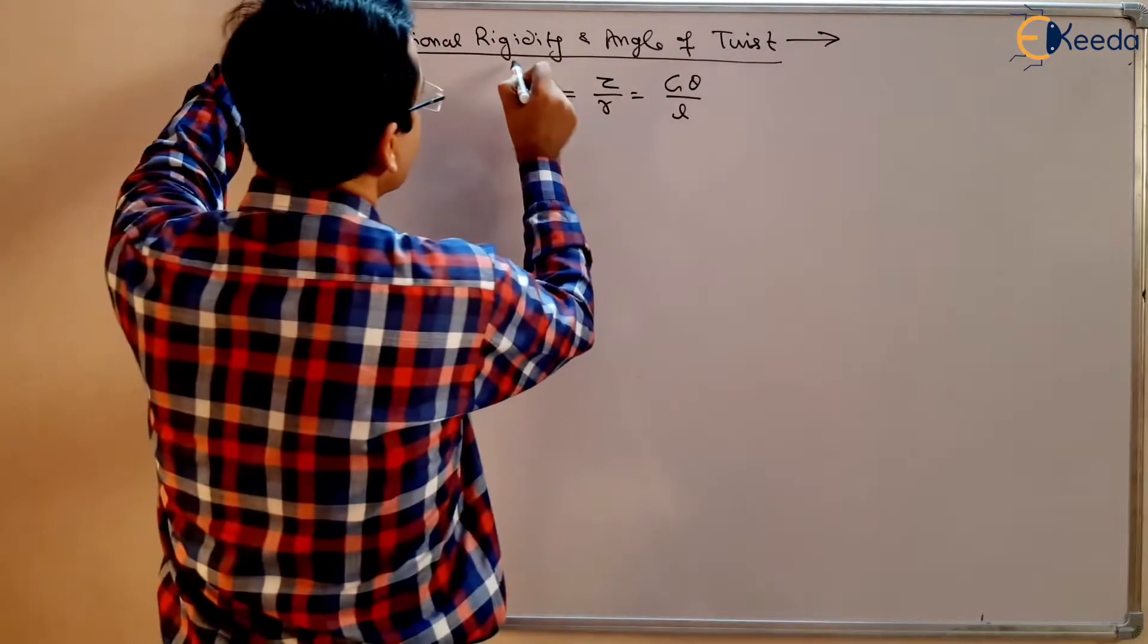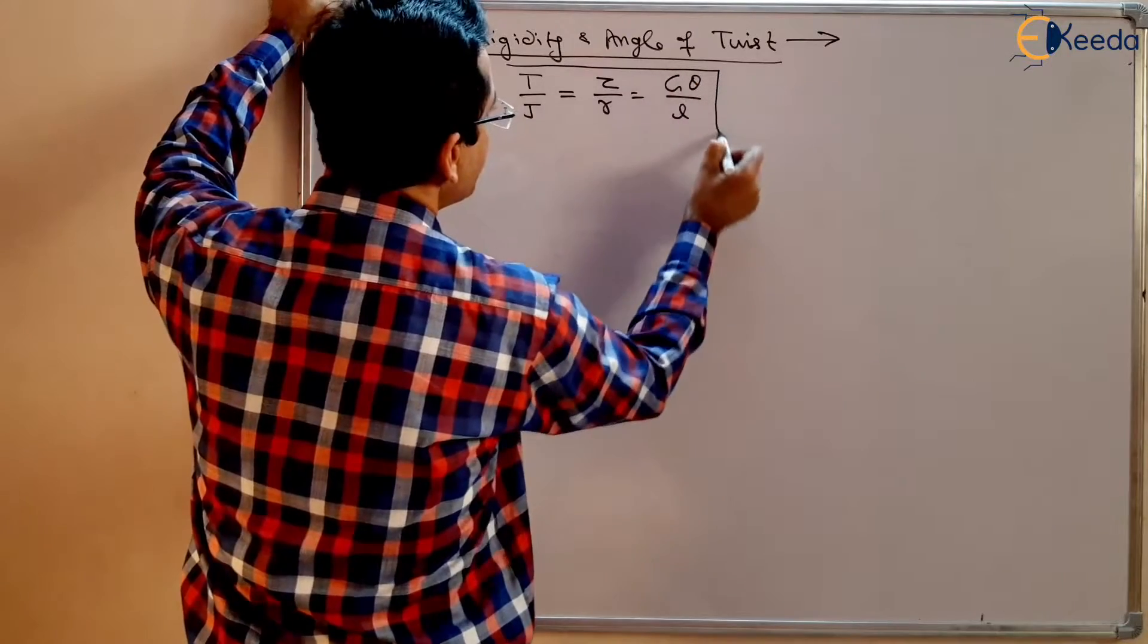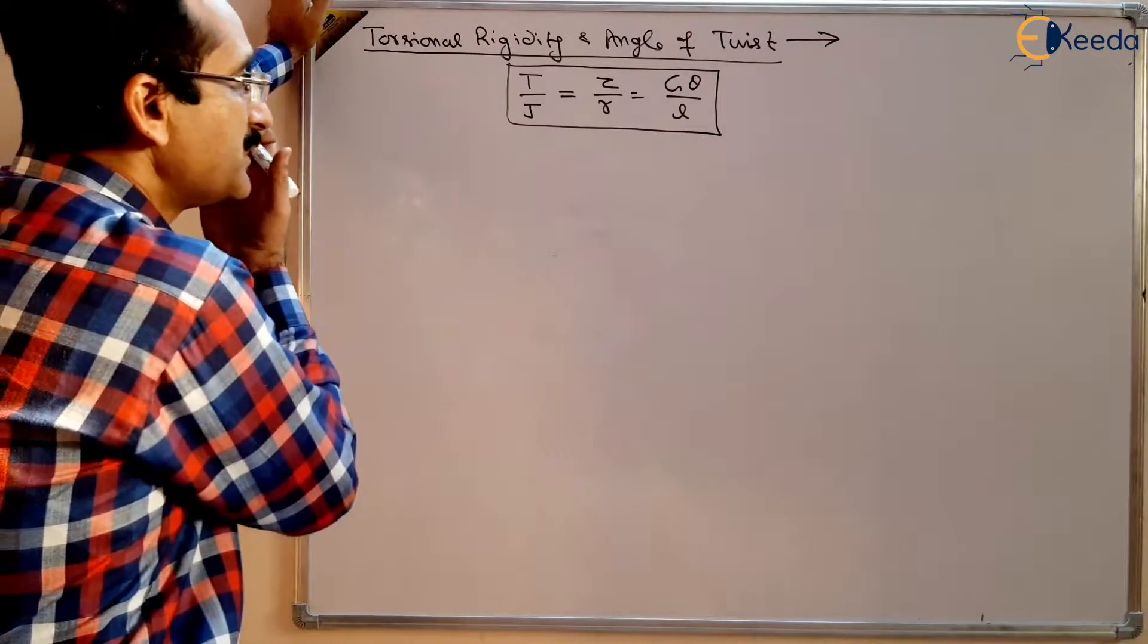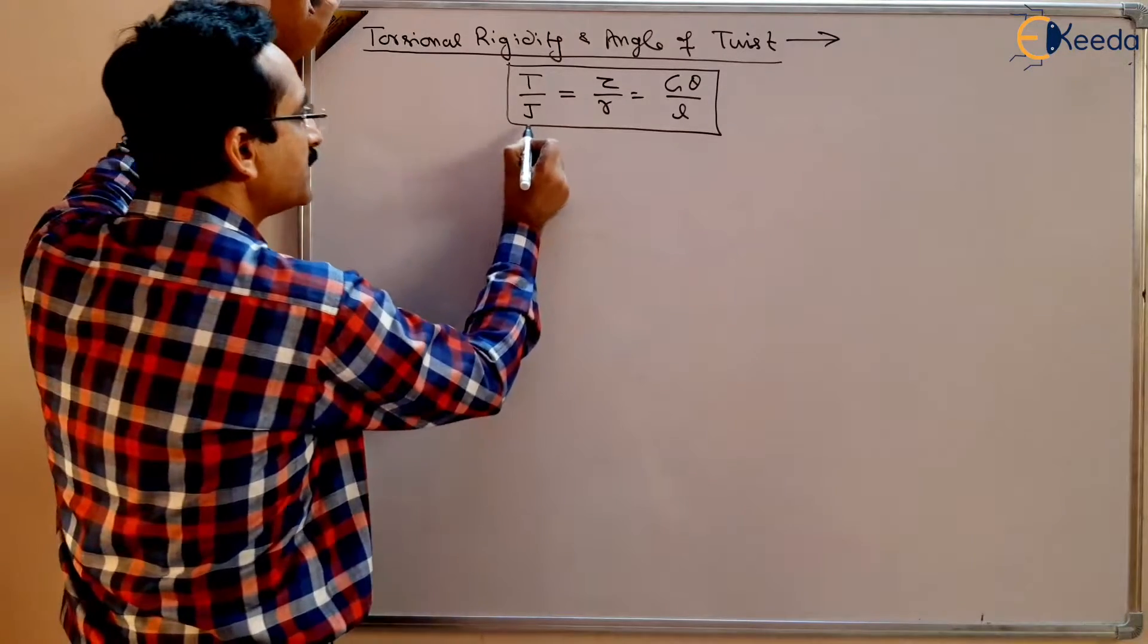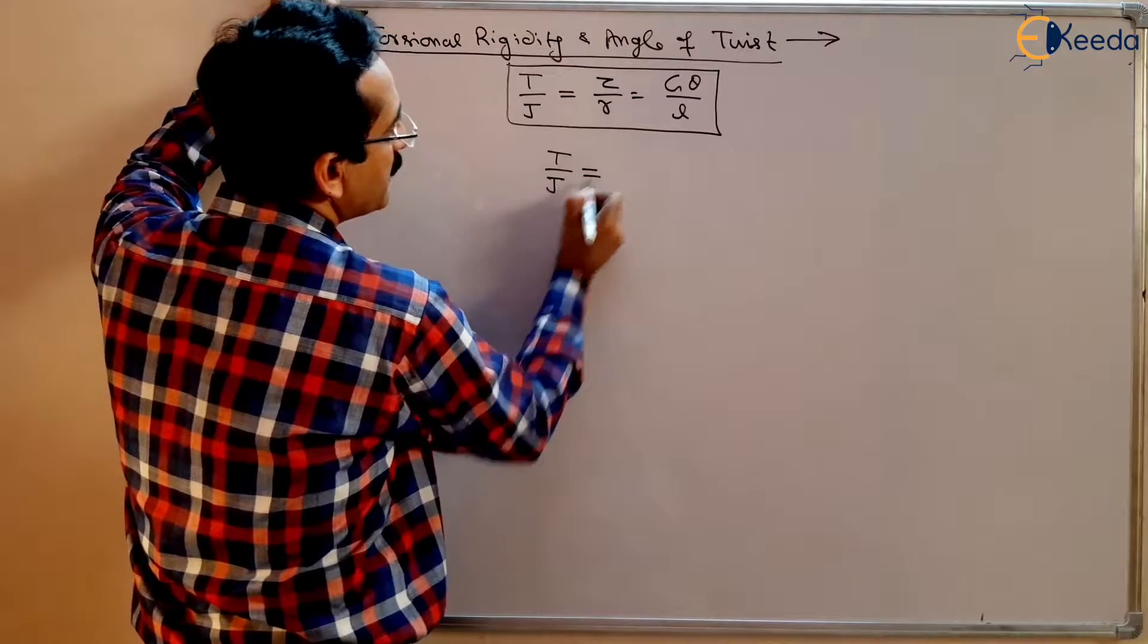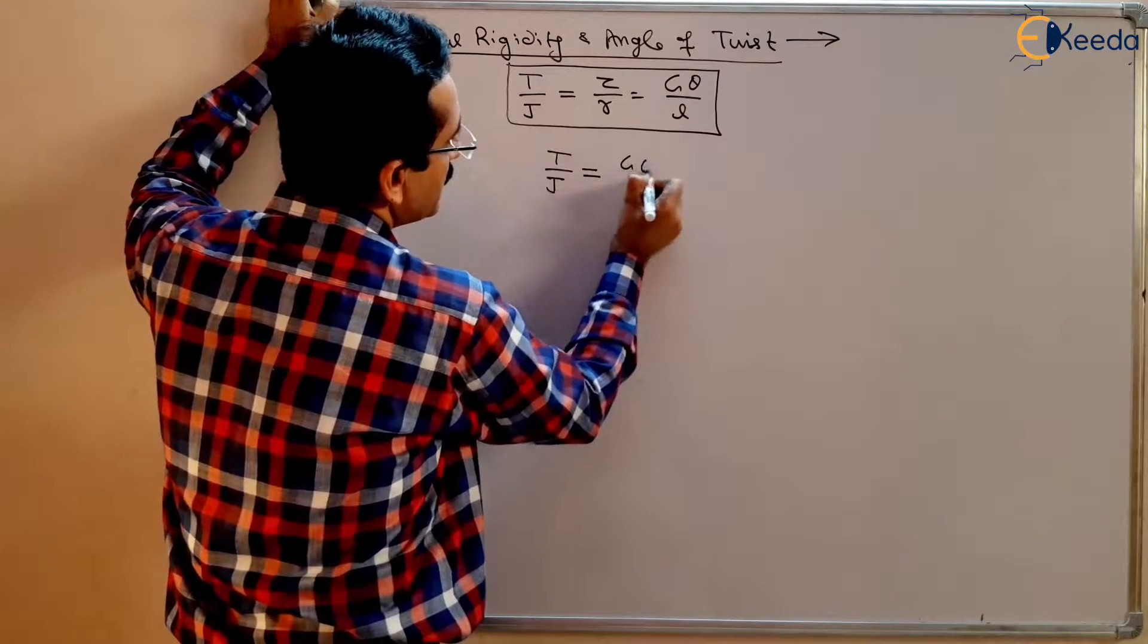This should be remembered always. In this equation, if I take only this equation T by J equal to G theta upon L.